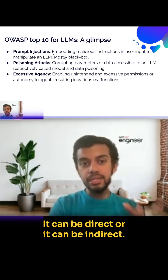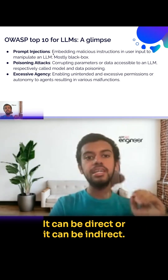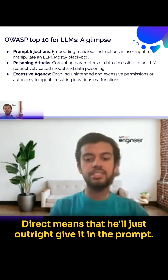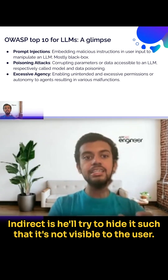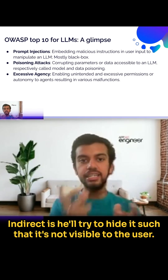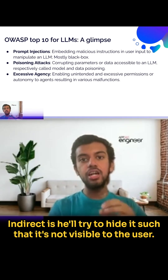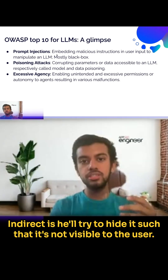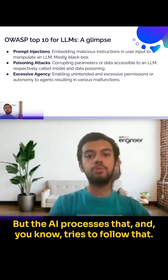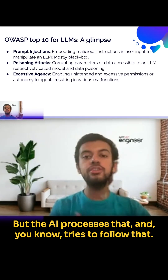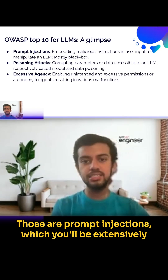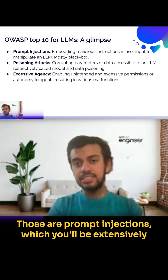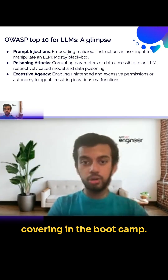Prompt injection can be direct or indirect. Direct means the attacker outright gives the malicious instruction in the prompt. Indirect means he hides it so it's not visible to the user, but the AI processes it and tries to follow it. These are prompt injections, which will be extensively covered in the boot camp.